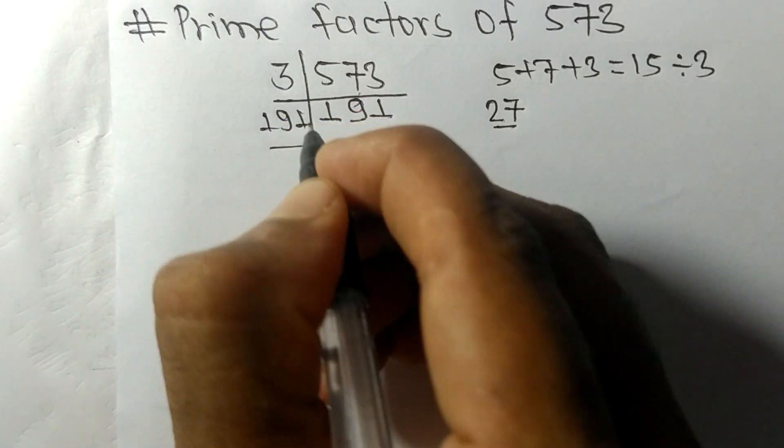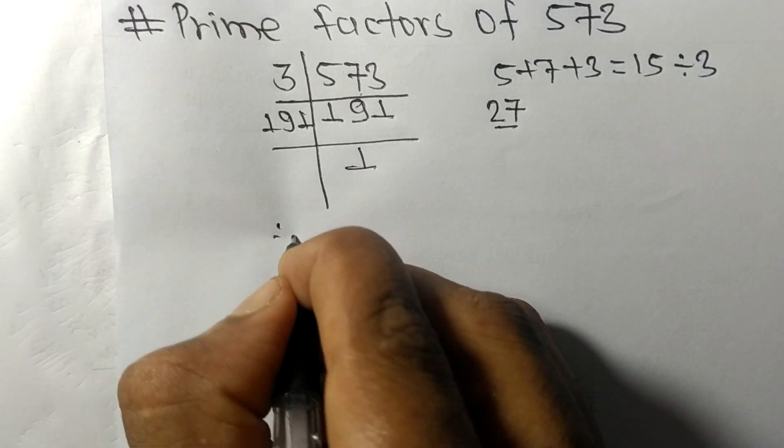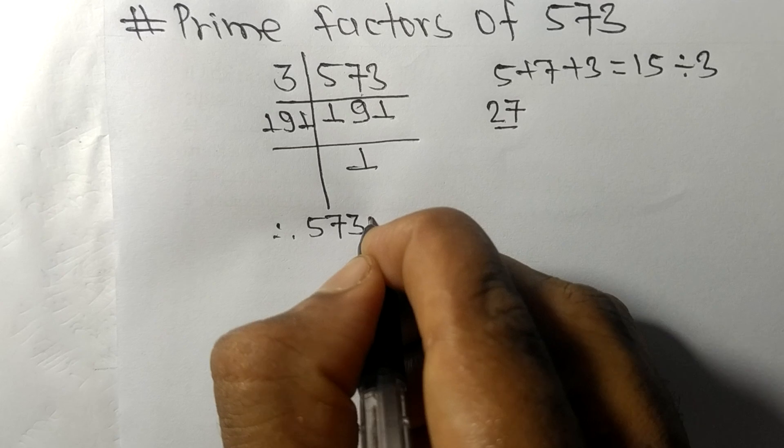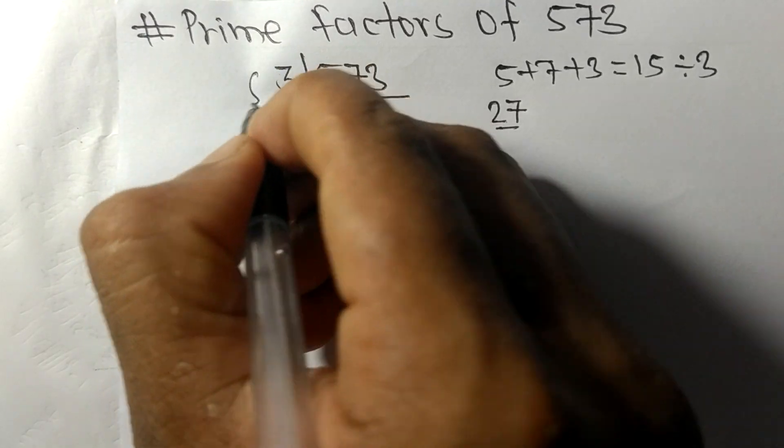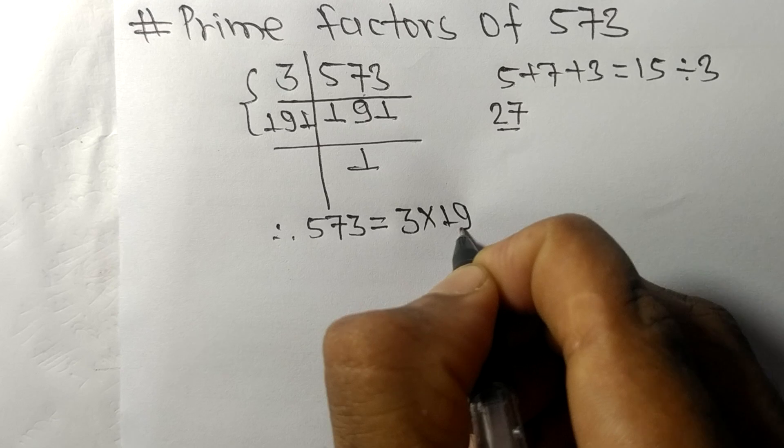And we get here 1. Therefore, 573 is equal to, from this side, it is 3 times 191.